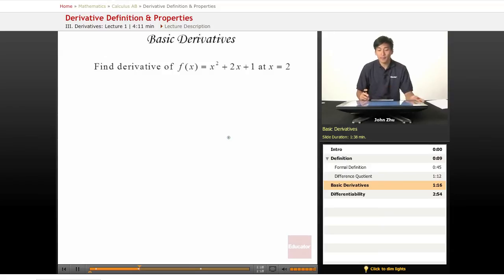So let's find the derivative of a function f(x) equals x squared plus 2x plus 1 at x equals 2. Well, let's just apply the direct definition of a derivative.